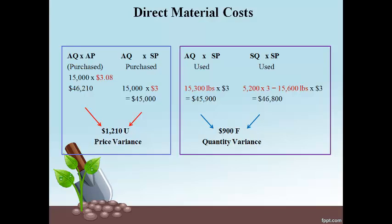The SQ times SP is the estimated cost of making the actual quantity of units. The actual quantity used of 15,300 pounds is lower than the quantity the company expected to use to make 5,200 units. Using 300 fewer pounds of material than expected resulted in a cost savings of $900. Spending less than expected is favorable, and spending more than expected is unfavorable.